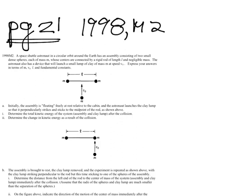A space shuttle astronaut is in circular orbit around the Earth and has an assembly consisting of two small dense spheres, each with mass M, whose centers are connected by a rigid rod of length L, which has negligible mass. Initially, this is free-floating at rest, and the astronaut launches a clay lump so that it hits perpendicularly at the midpoint. We want to know the kinetic energy of the system after the collision, and the change in kinetic energy as a result of the collision.